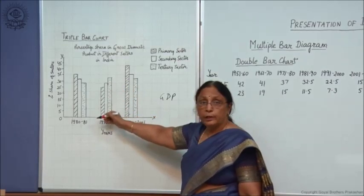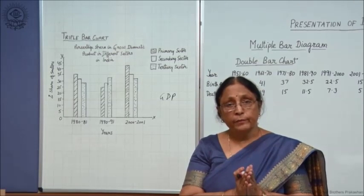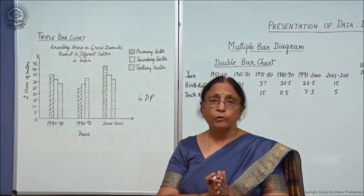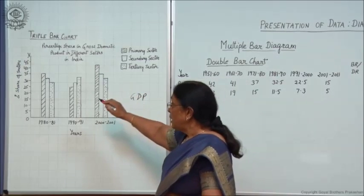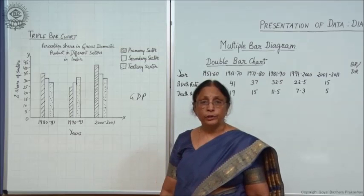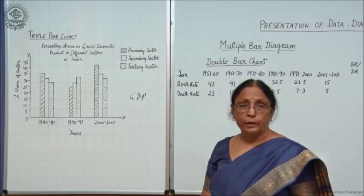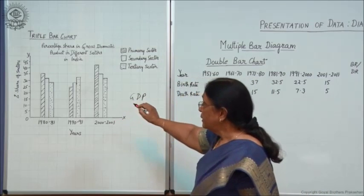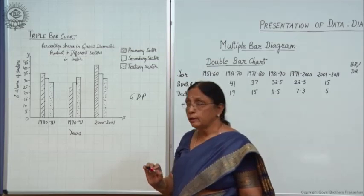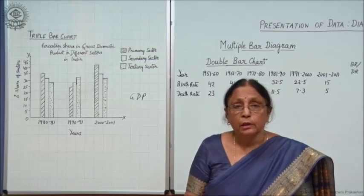On the basis of the data, you will draw three adjacent bars. As in double bar chart two bars were joined together, in the triple bar chart three bars are joined together to make a set of bars. One bar indicates primary, then secondary, then tertiary. Three sectors' contributions are shown in different years, and again keep in mind the width of all bars is the same — only the length varies according to the given data.